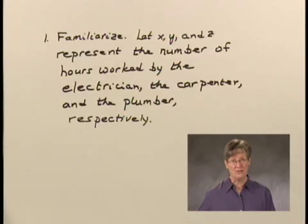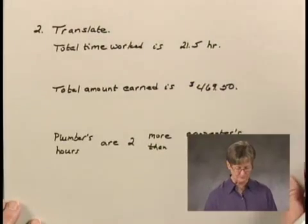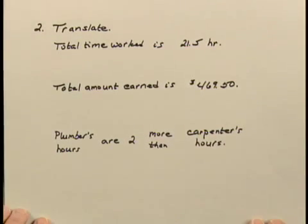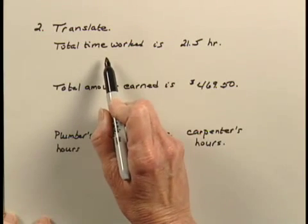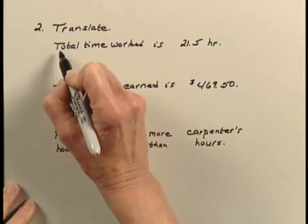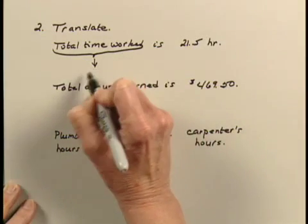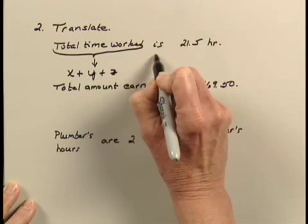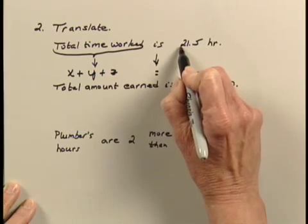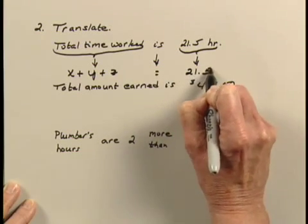Now, using these variables, we're going to translate to a system of equations using the information that we were given in the problem. We were told that the three worked together 21.5 hours, so this translates to the equation X plus Y plus Z equals 21.5.